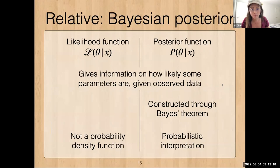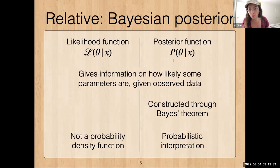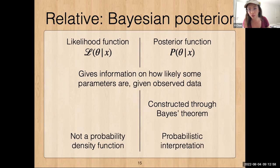In Bayesian analysis there is something that acts in a very similar role to the likelihood function in non-Bayesian formalism — the posterior function. Both give information about how likely each parameter is given some observed data. There are some differences: the posterior is constructed through Bayes' theorem and has a probabilistic interpretation, which is generally not true for the likelihood function. But despite these differences, the role they act in terms of analysis is very similar.